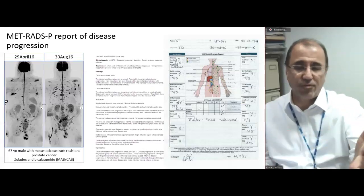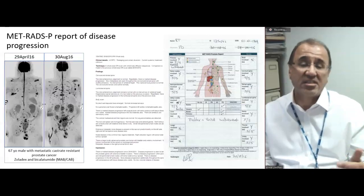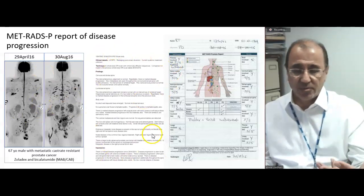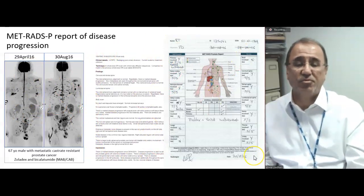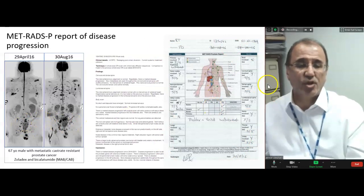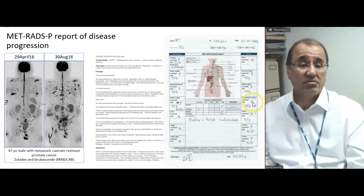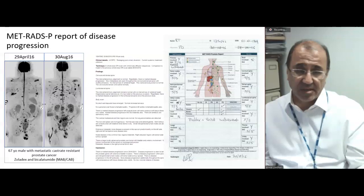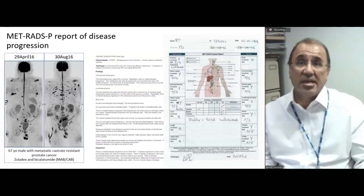Here is a typical METRADS report. Here are the images, the text form, and the METRADS form filled in. For example, looking at this patient who is progressing: lumbosacral spine — is there disease? Yes. What is the primary response assessment category? Progression highly likely. That's in more than 50% of the lesions.